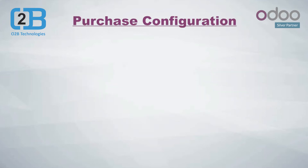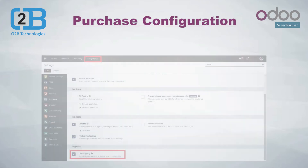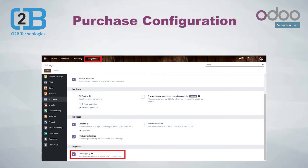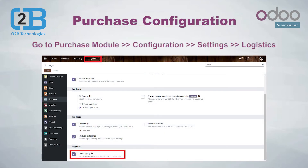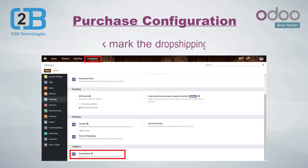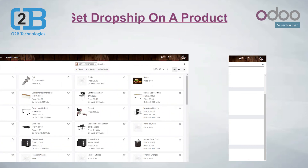Purchase configuration. To enable the drop shipping feature, go to the Purchase module, then go to Configuration Settings, then check mark on the drop shipping option under the Logistics section. Tick mark the drop shipping box — it will allow you to enable drop shipping on the products.